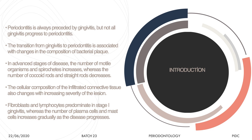In advanced stages of gingivitis, the number of motile organisms and spirochetes increases while cocci and straight rods decrease. Gram-negative anaerobic organisms increase in number, resulting in periodontal destruction. The cellular components of infiltrated connective tissue also change. In stage 1 gingivitis, fibroblasts and T-lymphocytes predominate, whereas in stage 4 it changes to a plasma cell or B-lymphocyte type of lesion, at which point the disease starts progressing with bone and tissue loss.